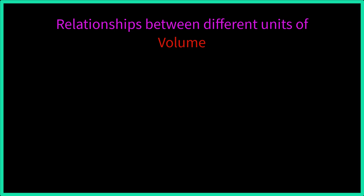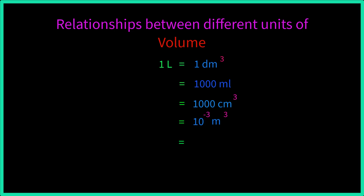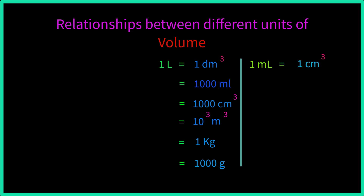Now look at this chart showing relationships between different units of volume. 1 liter equals 1 decimeter cube, equals 1000 milliliter, equals 1000 centimeter cube, equals 10⁻³ meter cube. Also, 1 meter cube equals 1000 liters, equals 10⁶ centimeter cube.